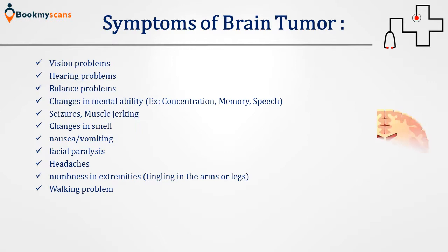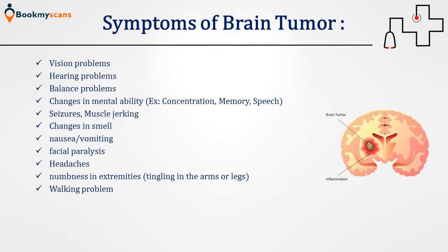The symptoms of brain tumour depend on their size, type and location. The most common symptoms include vision problems, hearing problems, balance problems, changes in mental ability like concentration, memory or speech, seizures and muscle jerking, changes in smell, nausea and vomiting, facial paralysis, headaches, numbness in extremities, tingling in the arms or legs, and walking problems.